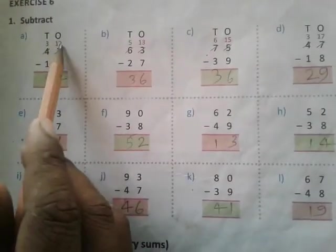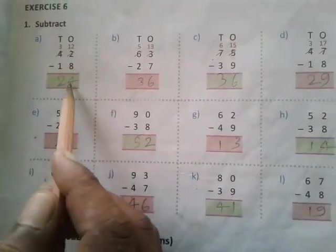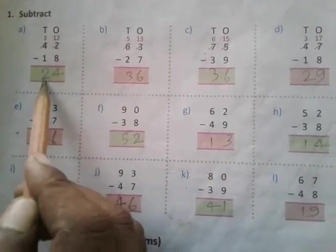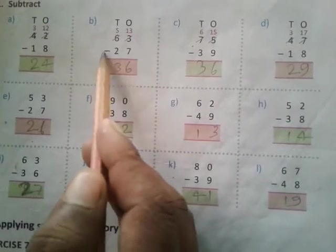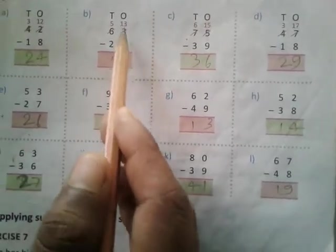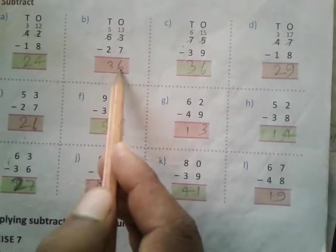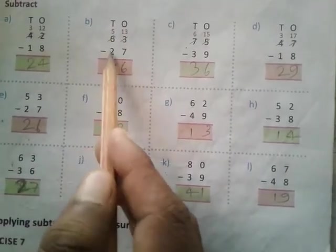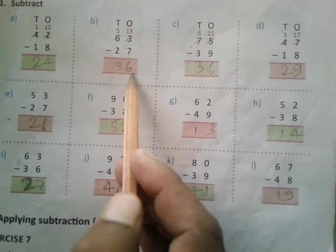A: 42 subtract 18. 2 becomes 12, 12 subtract 8 is 4, 3 subtract 1 is 2, equals 24. B: 63 subtract 27. 13 subtract 7 is 6, 5 subtract 2 is 3, equals 36.